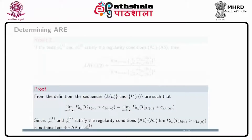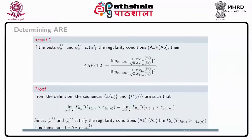Next we come to the determination of asymptotic relative efficiency. The definition of ARE as given above is not enough to compare in practice, so we need an equivalent expression so that efficiency can be evaluated easily. If tests phi_n1 and phi_n2 satisfy the regularity conditions A1 to A5, then ARE of test 1 relative to 2 is defined by the limit as n tends to infinity of (1/root n) times mu prime(T_n, theta_n) divided by sigma(T_n, theta_n), whole square.